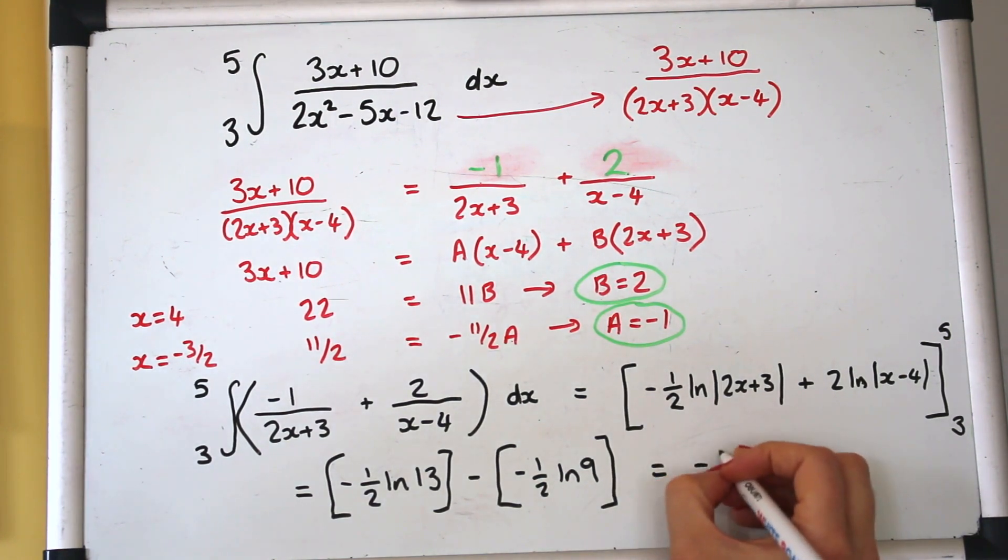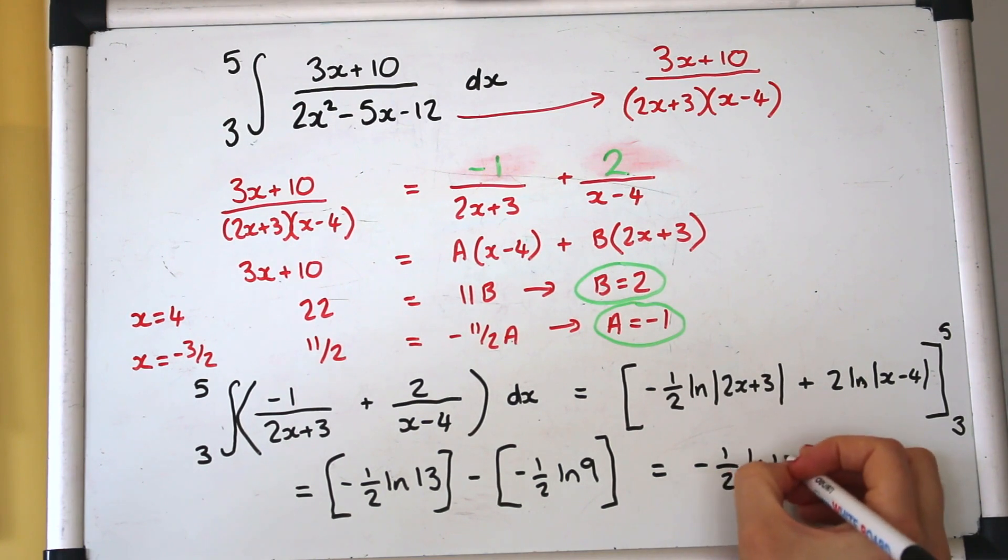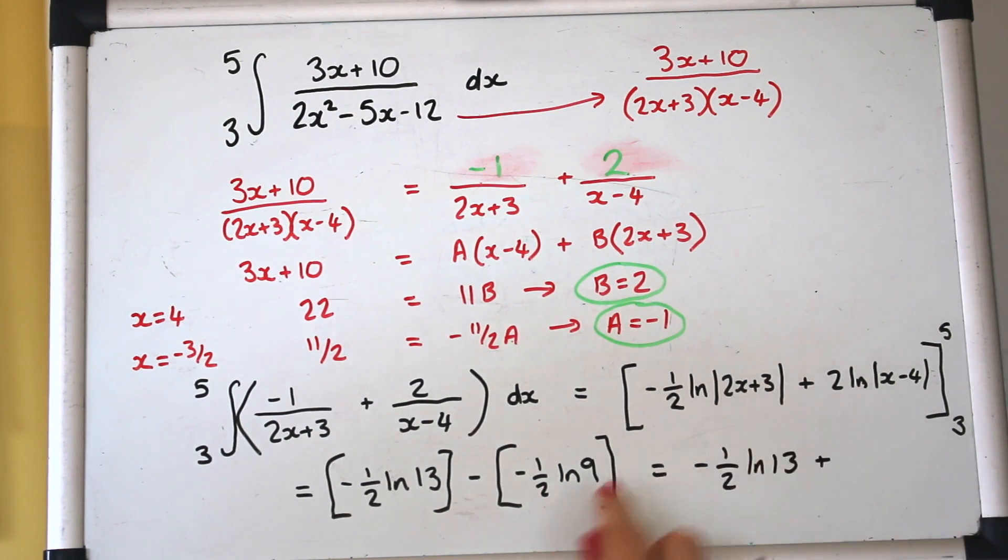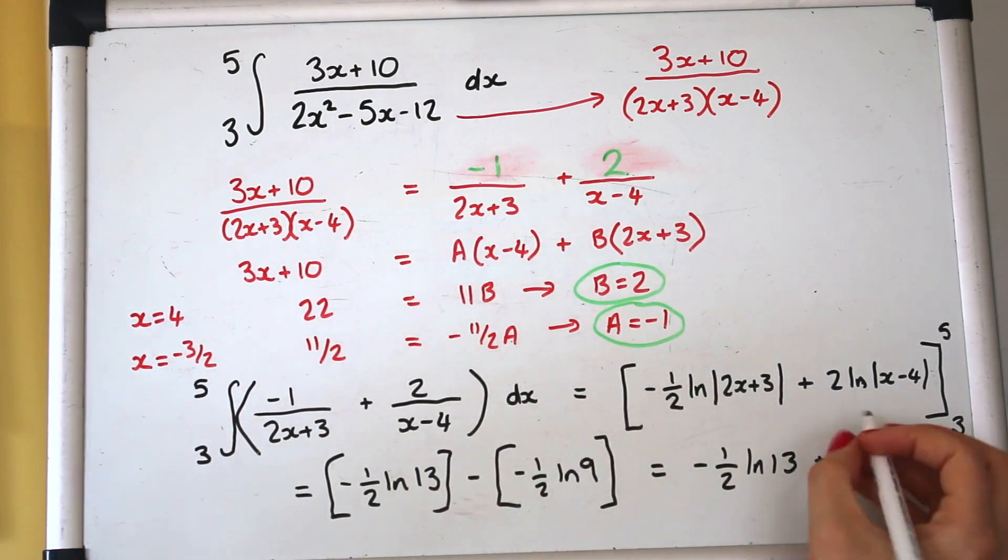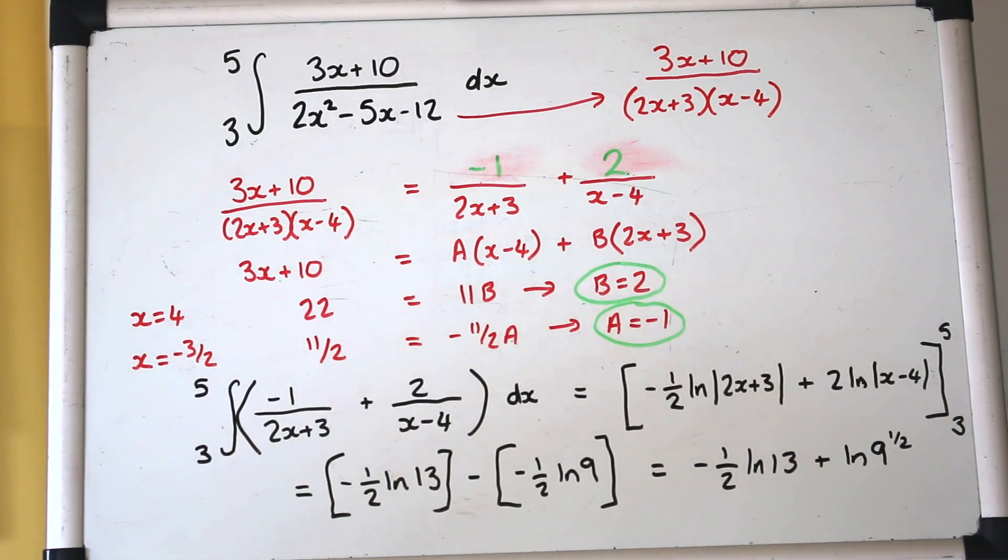So we've got, we can tidy this up just a smidge, we've got minus a half ln of 13 plus and then that log of 9 we could bring that half up to be a power so log of 9 to the power of a half.